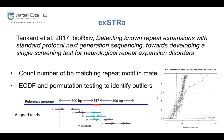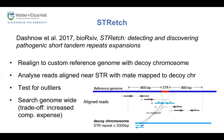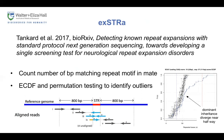ExSTRa was developed by Rick Tankard, a PhD student in our lab who recently graduated. ExSTRa takes anchor reads and counts the number of base pairs in the mate that match the repeat motif. It applies permutation testing to identify outliers, which means you need a control cohort. ExSTRa also generates ECDF plots that allow you to visualize the situation. One sample with a colored curve shows an expansion — the curve is shifted to the right in the top half of the ECDF, corresponding to significantly more repeated bases. For a dominant inheritance model, this shift starts around halfway up the ECDF; for a recessive model, you'll see a shift from the beginning.